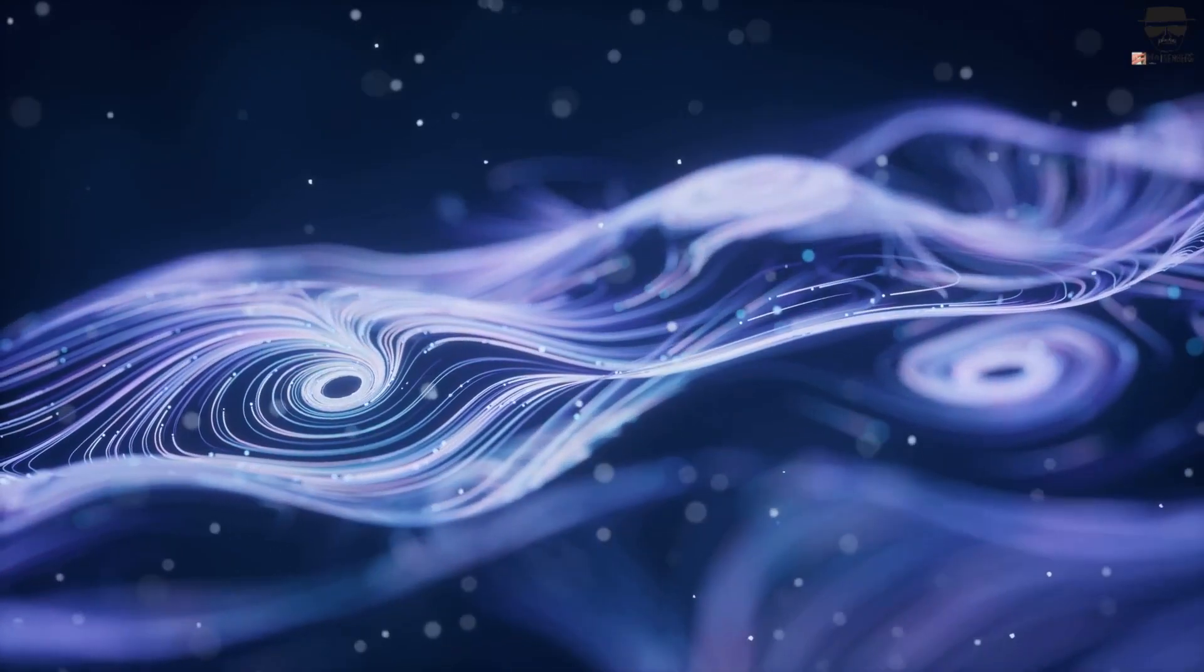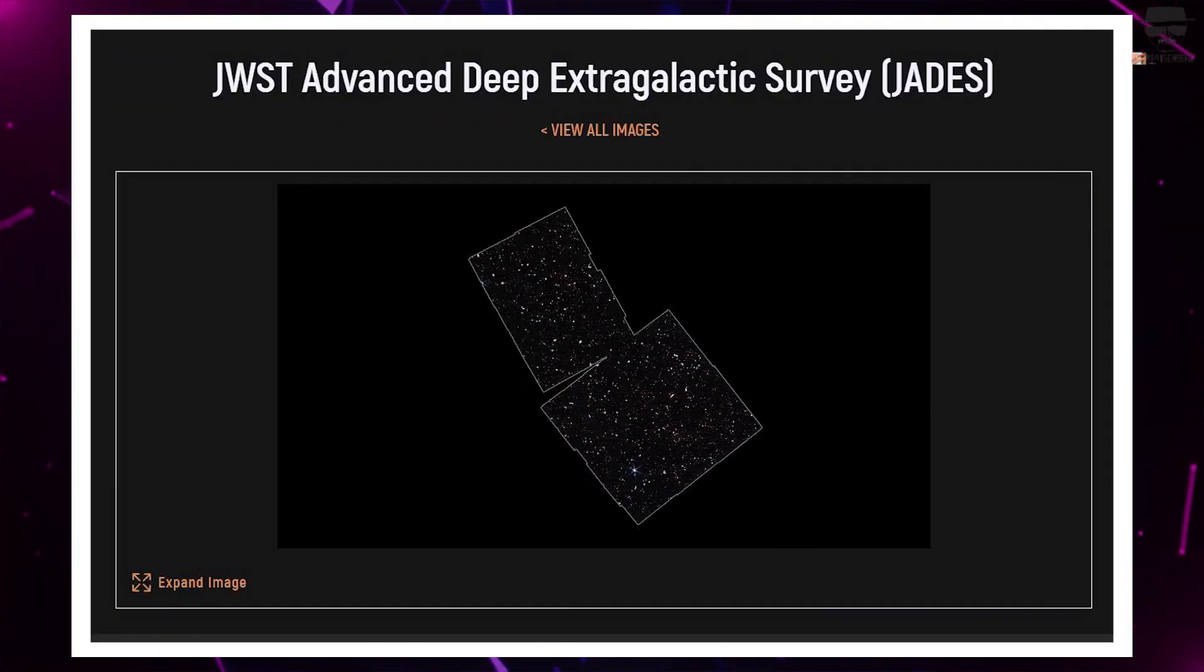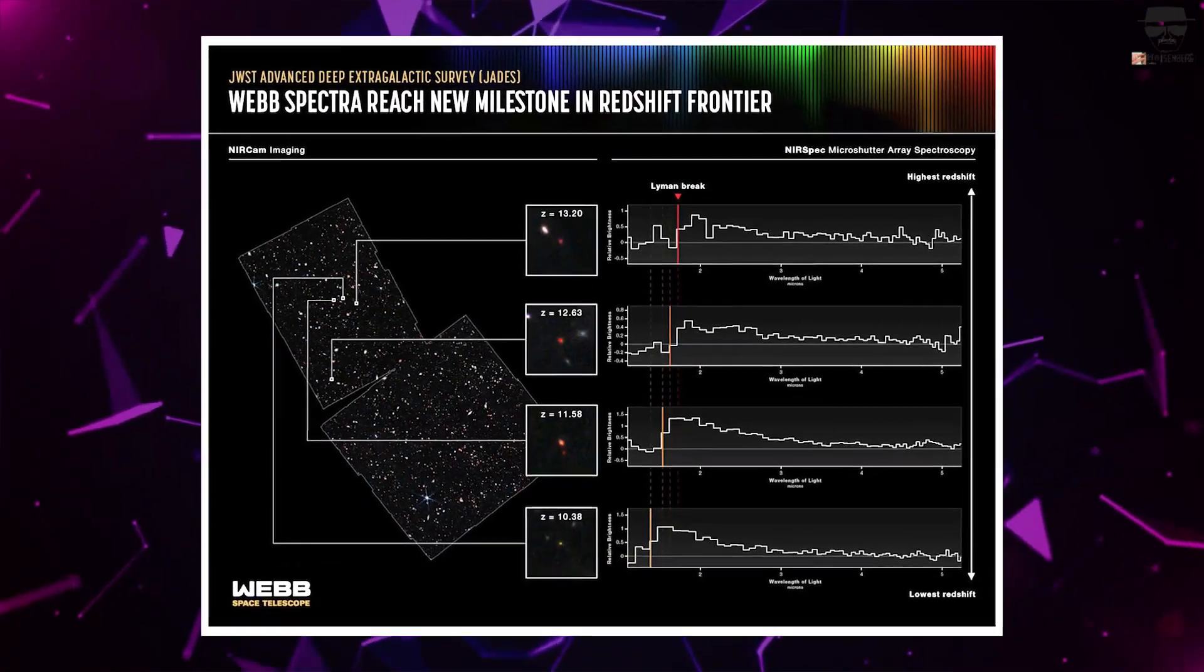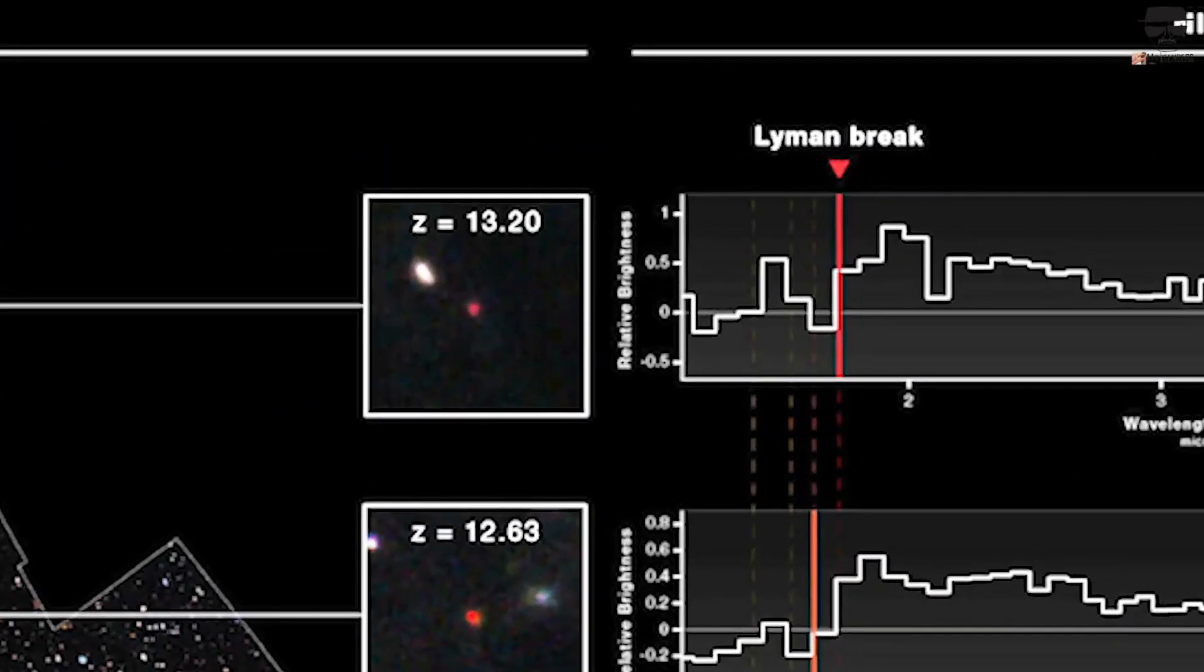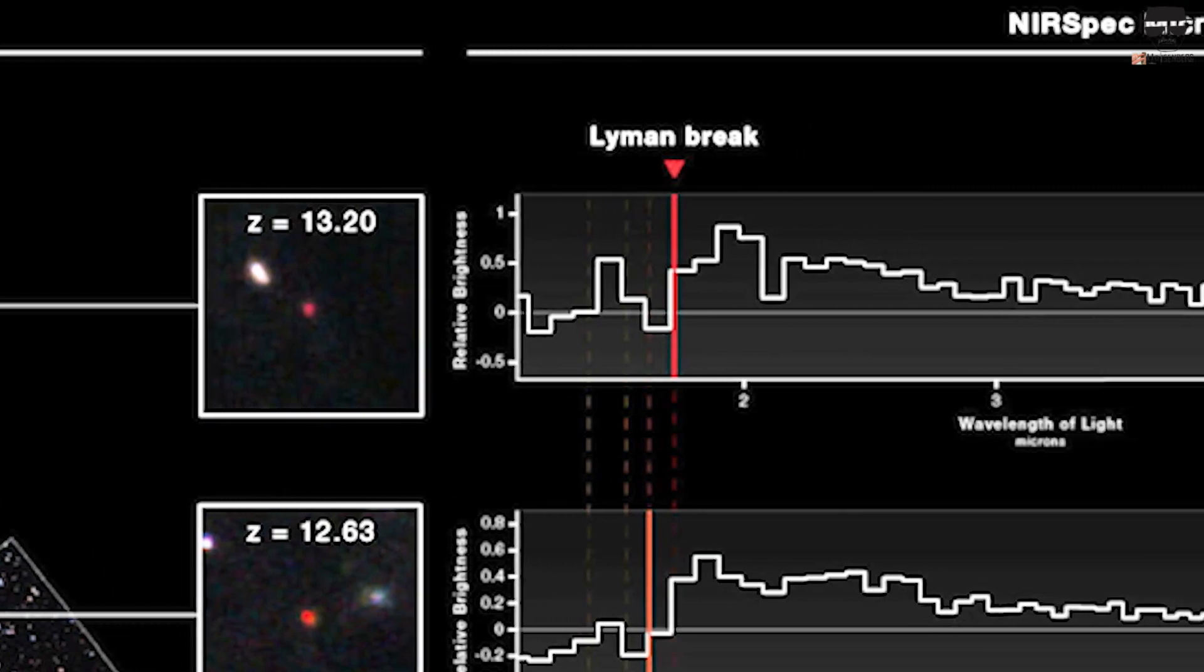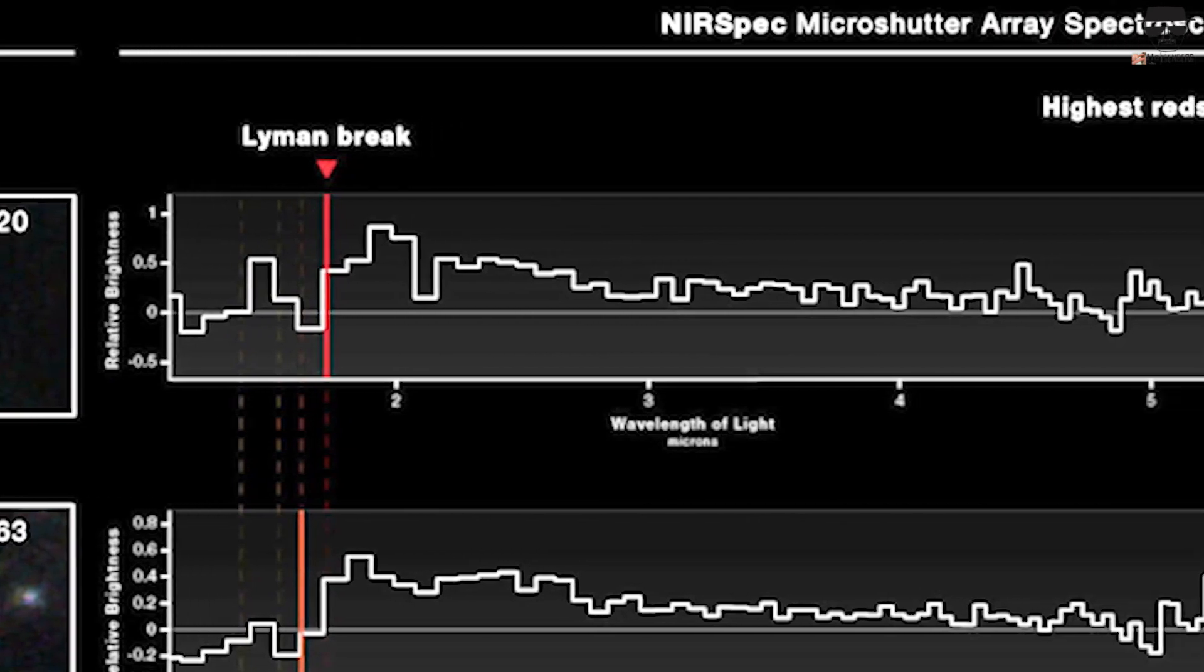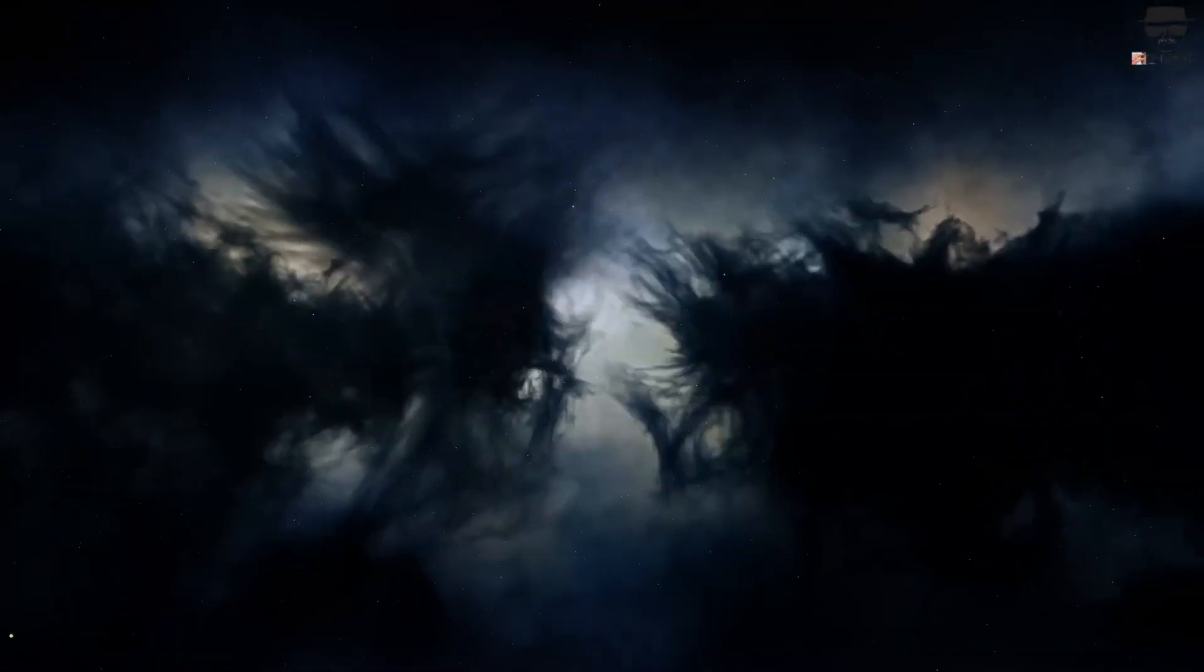During the JWST Advanced Deep Extragalactic Survey, known as JADES, astronomers explored and calculated distance estimates for four galaxies. Surprisingly, one of them returned a mind-boggling redshift value of 13.2. This suggests that the galaxy has been around since 320 million years after the Big Bang happened. The sheer discovery of this galaxy has caused a major buzz in the world of astronomy.